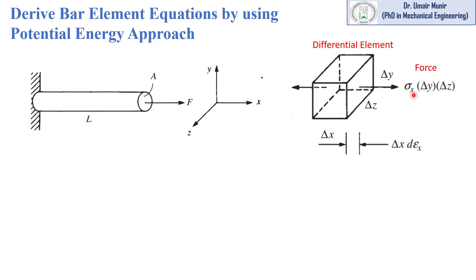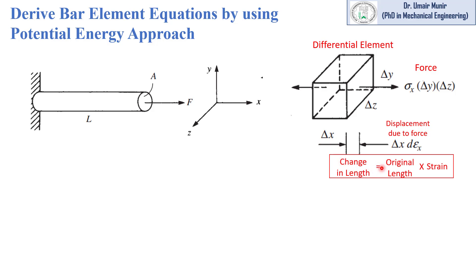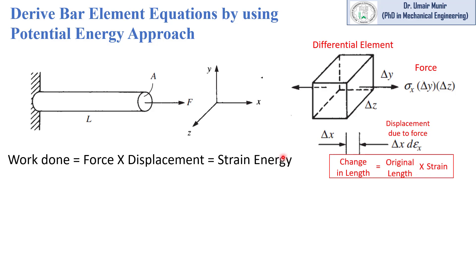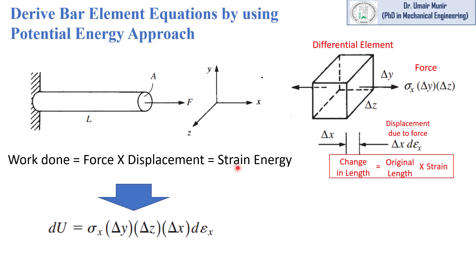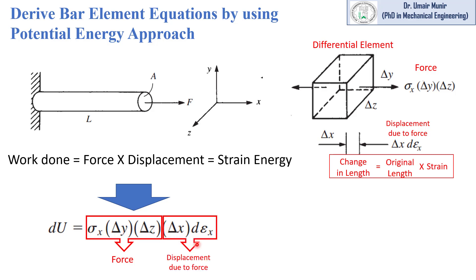A force is acting on the face delta y delta z, and the stress multiplied by the area is called a force in the x direction. If we multiply this force with the displacement due to this force, we will get the work done. This displacement is the change in the length, which is equal to the original length multiplied by the strain. Work done equals force into displacement, which equals strain energy.